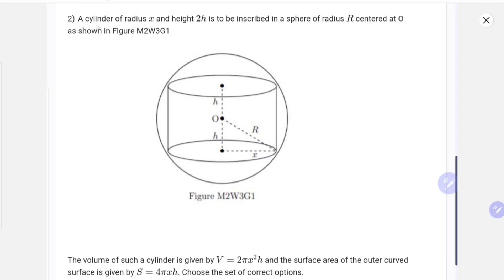In the second question, we are given a cylinder of radius x and height 2h that is inscribed in a sphere of radius capital R centered at O. The volume of the cylinder is given by v equals 2πx²h, and the surface area of the outer curved surface is given as s equals 4πxh.